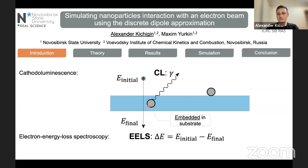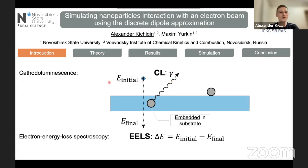The particle, when interacting with fast electrons, becomes excited and starts emitting light. This light is collected, its intensity is measured, and this is how the cathodoluminescence spectrum is obtained.